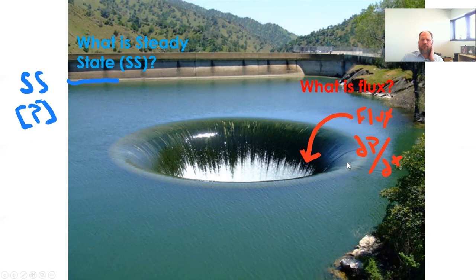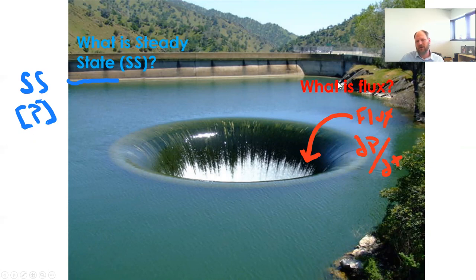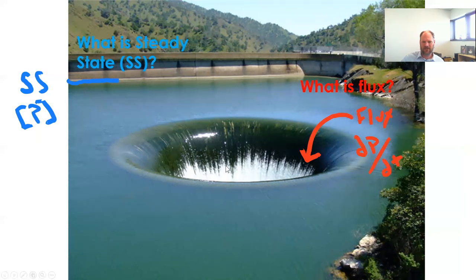Flux is the rate at which something is changing — it's a change of something with respect to time. So in the case of a reservoir, a flux might be the flux of water into and out of the reservoir. It's going to be the rate at which water is leaving or flowing in downstream.